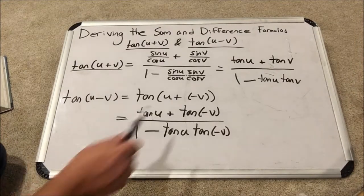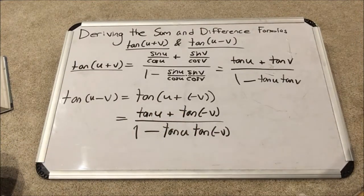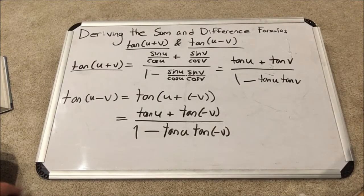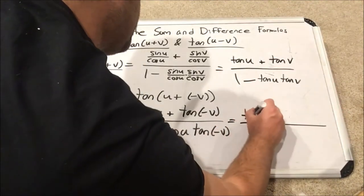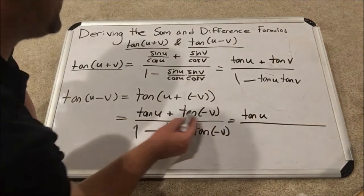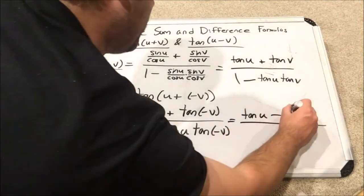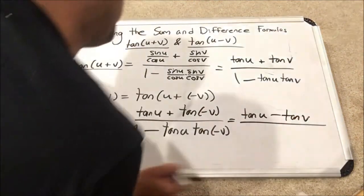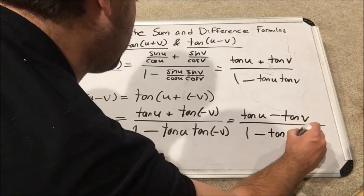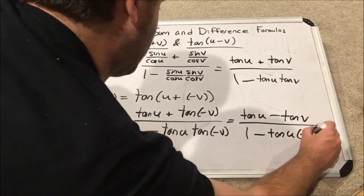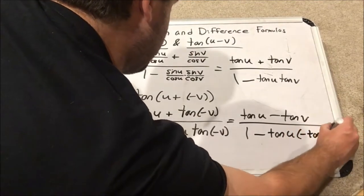And so if I plug in negative v, that is equal to negative tangent of positive v. So I'm going to rewrite tangent u. So tangent negative v is equal to negative tangent v. And on bottom, we have one minus tangent u negative tangent v.